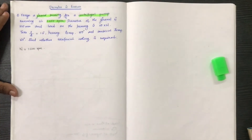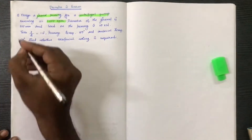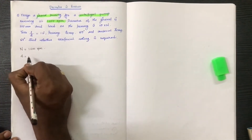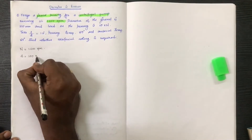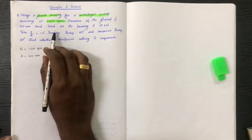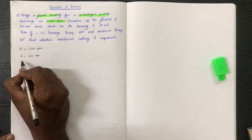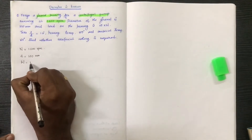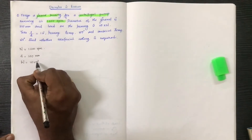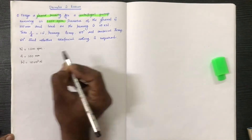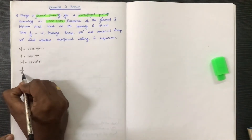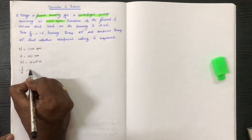The diameter is 100mm. The load on the bearing is 15kN, so W is equal to 15 × 10³ N. Take L by D is equal to 1.5.